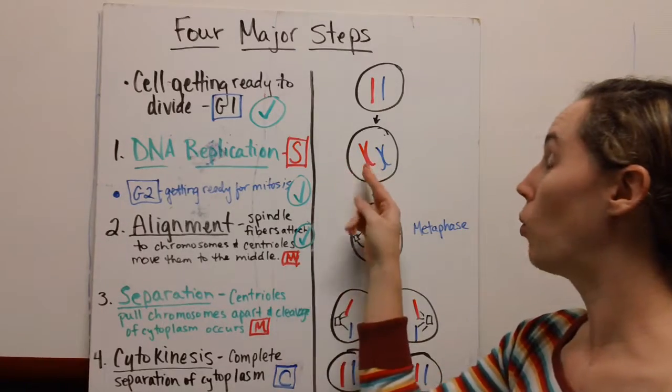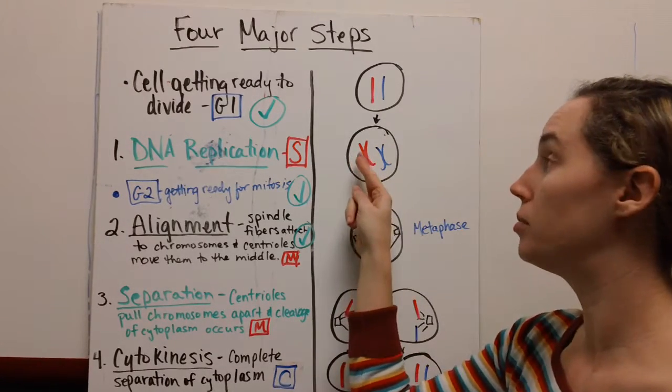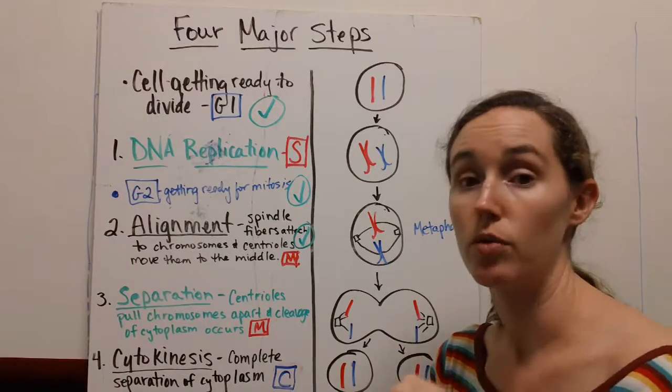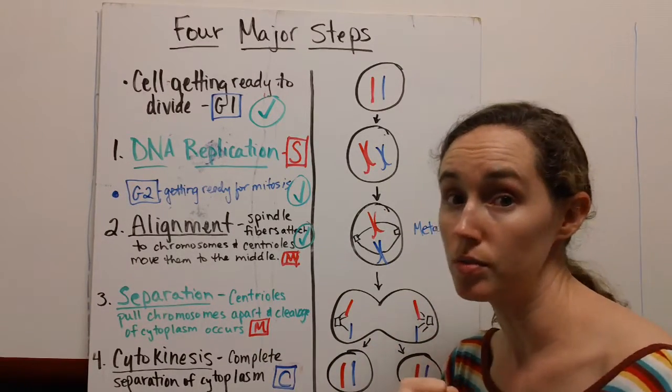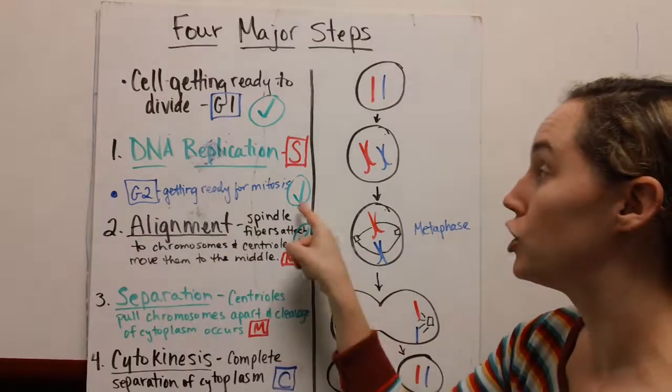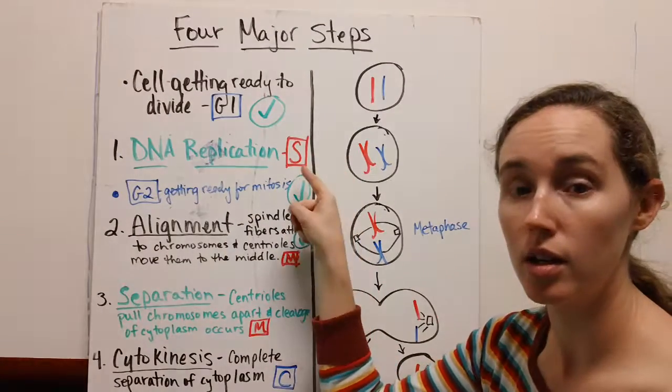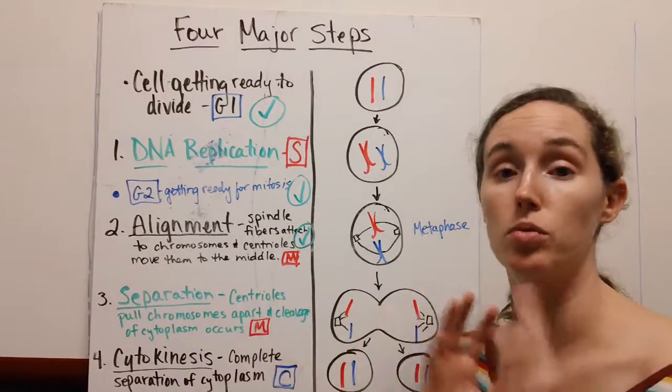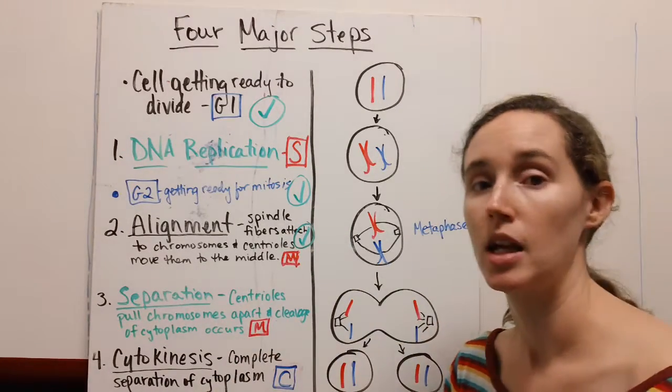Once we have our DNA replicated, then we're going to start making the proteins to get ready for mitosis during G2. We're going to have that G2 checkpoint to be sure that the DNA is normal and that we're ready to go into mitosis.